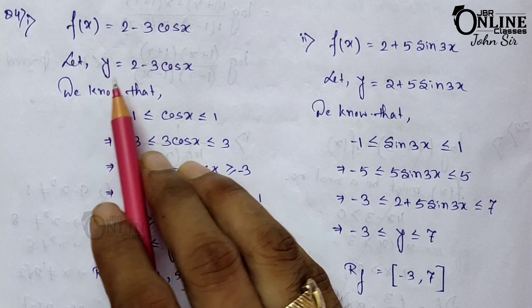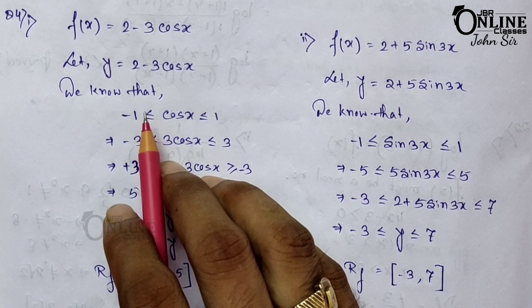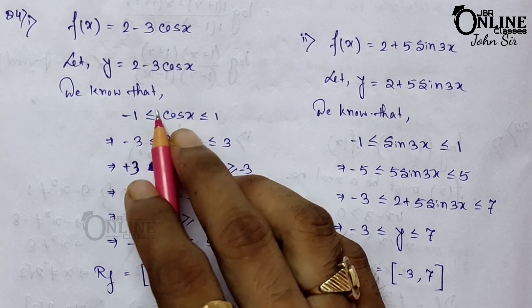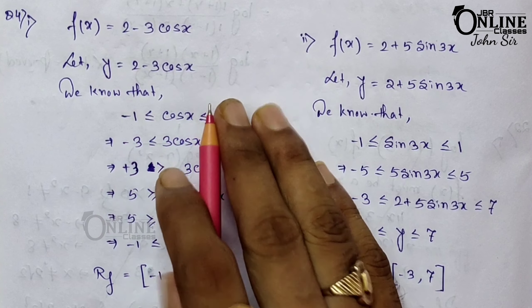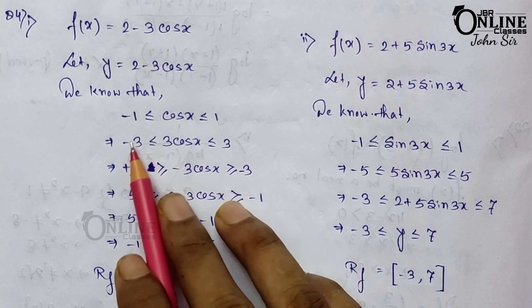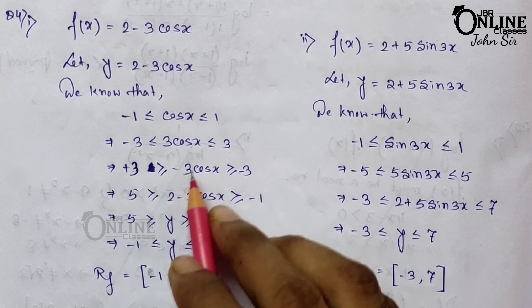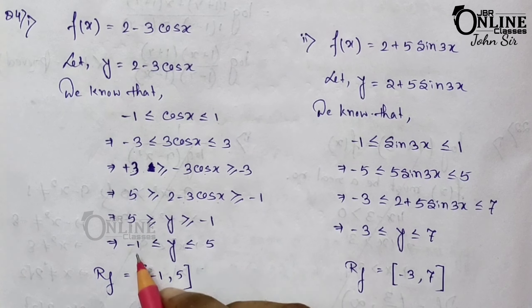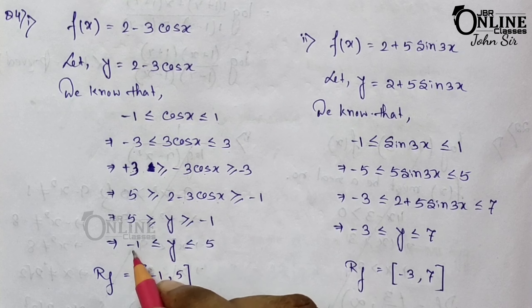Sum number 24 is the last sum for this video. Find the range of the following functions. First: f(x) = 2 − 3cos x. Let y = 2 − 3cos x. We know −1 ≤ cos x ≤ 1. Multiply by 3: −3 ≤ 3cos x ≤ 3, then multiply by −1 (flip): −3 ≤ −3cos x ≤ 3. Add 2: −1 ≤ 2 − 3cos x ≤ 5. So −1 ≤ y ≤ 5, meaning the range is [−1, 5].